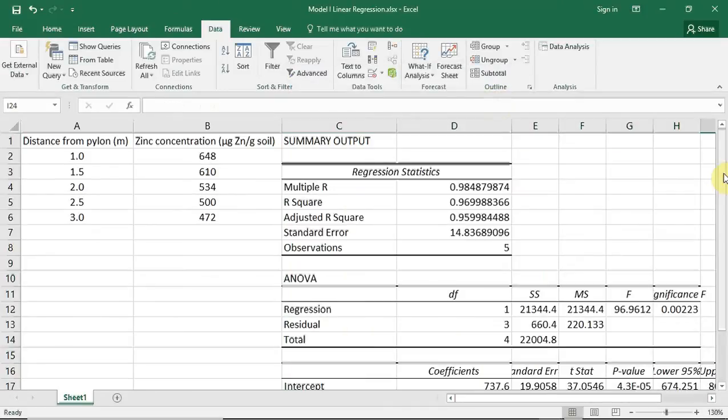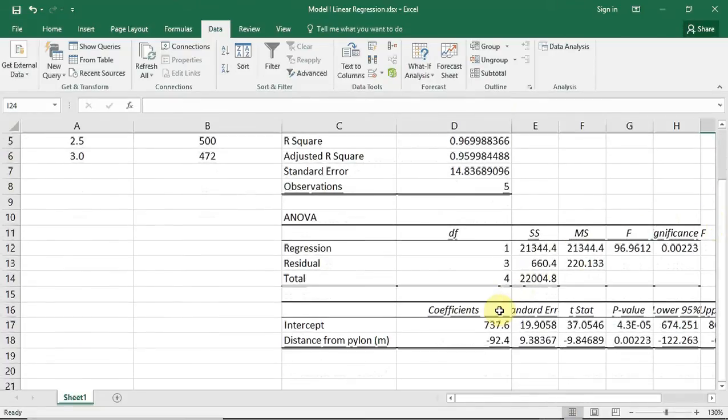As you can see, the summary output has given us much information. The results that we are interested in are at the bottom, under coefficients. The intercept, or the A value, is given as 737.6, whereas the slope, the B value, is given as minus 92.4.